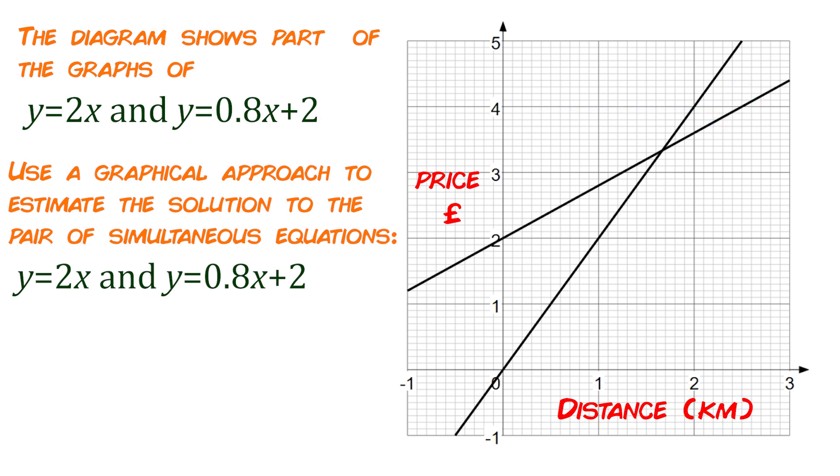But there is this one sweet spot here, this one point where both of those taxis are going to go the exact same distance and they're going to cost the exact same amount. And that's really what we're looking for. We would say that is the solution to this simultaneous equation, where both of those things are equal to each other.